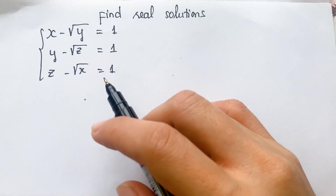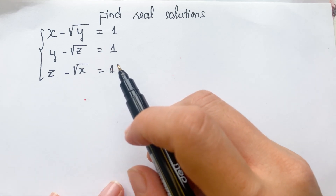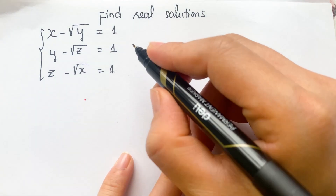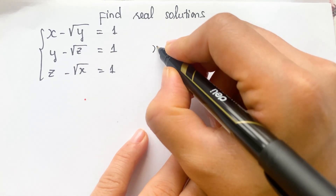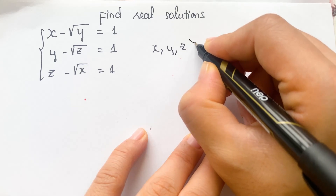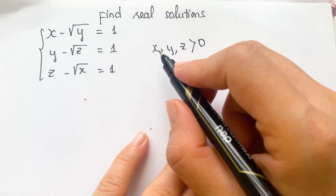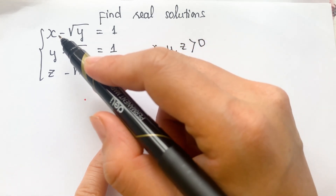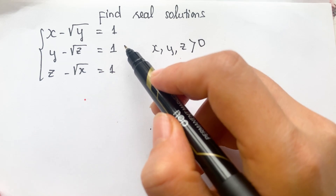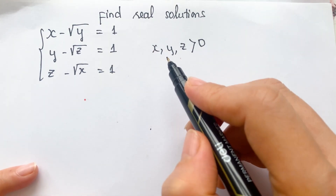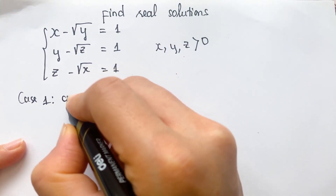Hello. How to solve this system of equations? First, everyone can see that you need to find the requirements of the equations. Look at the square root of x, square root of y, square root of z. We need x, y, and z greater than zero, because when x equals zero, minus square root of y equals one is undefined. So we need to find the requirements.